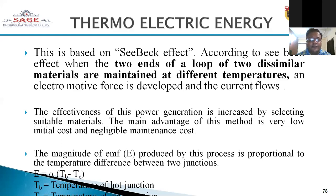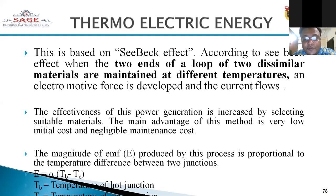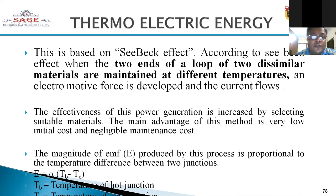The main advantage of this method is very low initial cost and negligible maintenance cost. The magnitude of EMF produced by this process is proportional to the temperature difference between the two junctions. That is: e = α(Tb − Tc), where Tb is the temperature of the hot junction and Tc is the temperature of the cold junction.